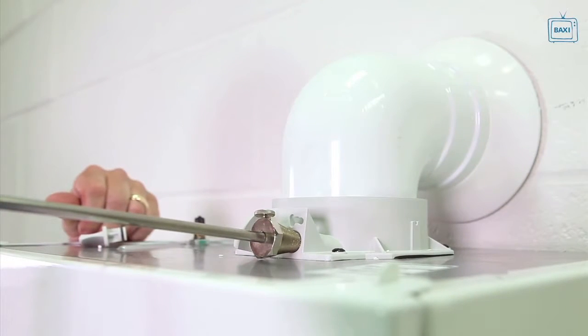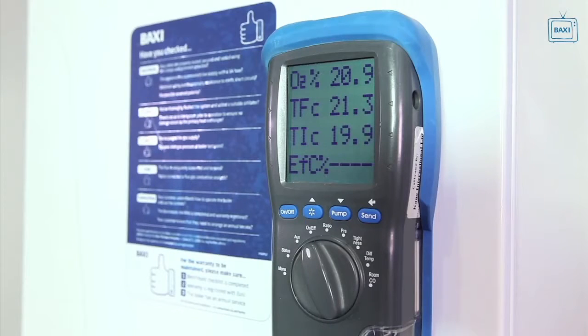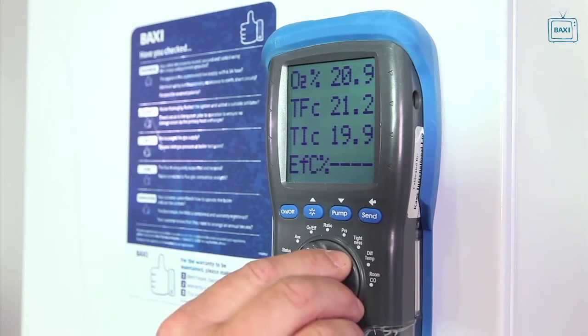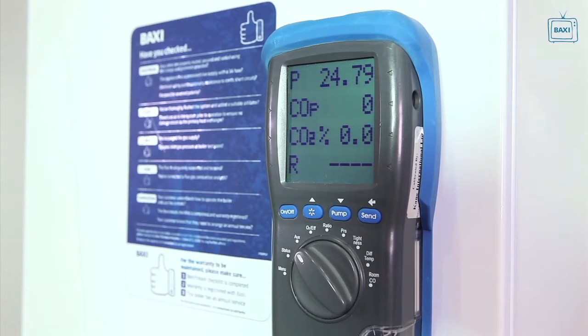Carry out the flue integrity combustion check by inserting the analyzer probe into the air inlet testing point, allowing the reading to stabilise. A positive check will show a reading of oxygen equal to or greater than 20.6% and carbon dioxide at less than 0.2%.